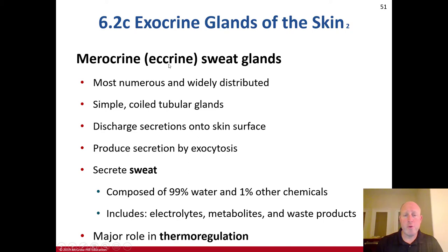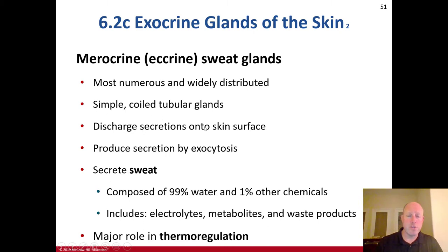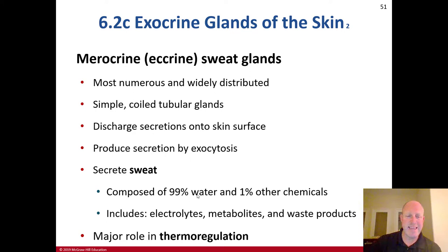The merocrine, or eccrine, glands are sweat glands — the most numerous and widely distributed of those sweat glands. They're simple coiled tubular glands. They discharge secretions onto the skin surface and produce secretion by exocytosis. They secrete sweat, which is composed of 99% water and 1% other chemicals. You sweat out water pretty much, and a little bit of other things.